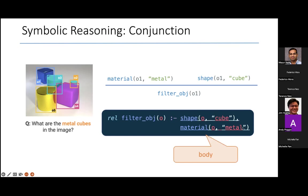We have on the left what is called the head of the rule, and on the right, we have the body. We use comma to denote conjunction. So the way to read this rule is if O is a shape with attribute cube and O also has material metal, then O belongs to the relation filter_obj. It's an if-then rule, also called a Horn clause.